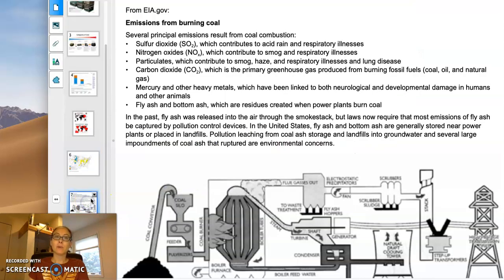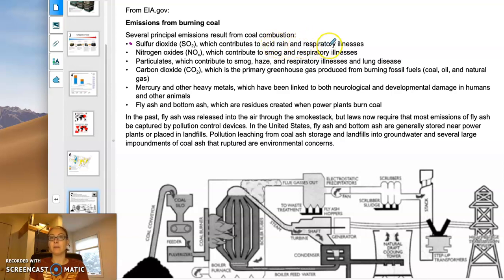Why should we worry about burning coal? There are a lot of major air pollutants. The first is sulfur dioxide: when sulfur is burned in an aerobic environment, it mixes with oxygen, giving us acid rain and acids that can also irritate the respiratory system. We also have a lot of nitrogen oxides — NOₓ — representing multiple types of nitrogen and oxygen combinations.